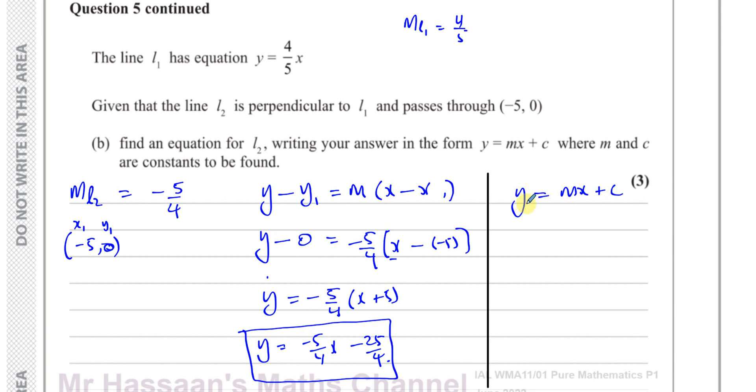So we could use this method where the Y and X here are the point given. So you've got 0 equals the gradient, which is minus 5 over 4, times X, which is minus 5, plus C. So this tells us what C is. That's negative 25 over 4.